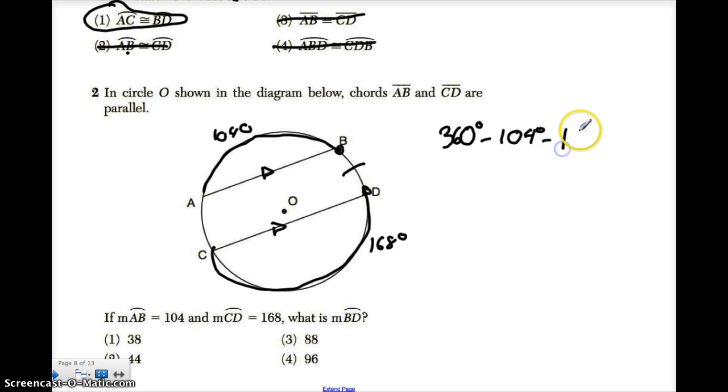and I'm going to subtract 168. Now if I subtract these two, that will tell me what the remaining part arcs are. So that would tell me what AC and BD together would be. So let me take out my calculator, because I don't feel like doing this in my head. So 360 minus 104 minus 168 equals 88. But that is not the answer. Don't go down and mark this. You would be dead wrong.